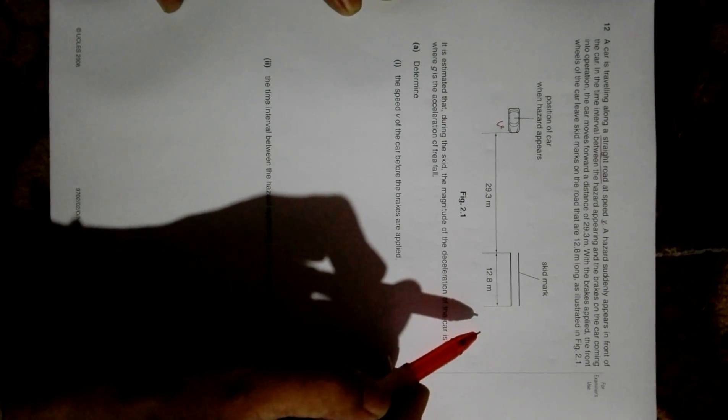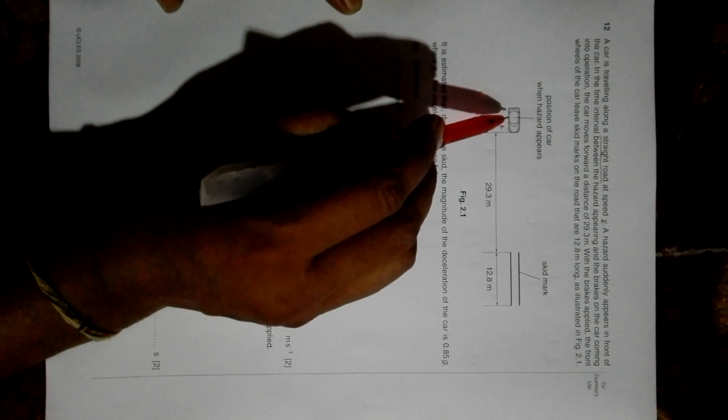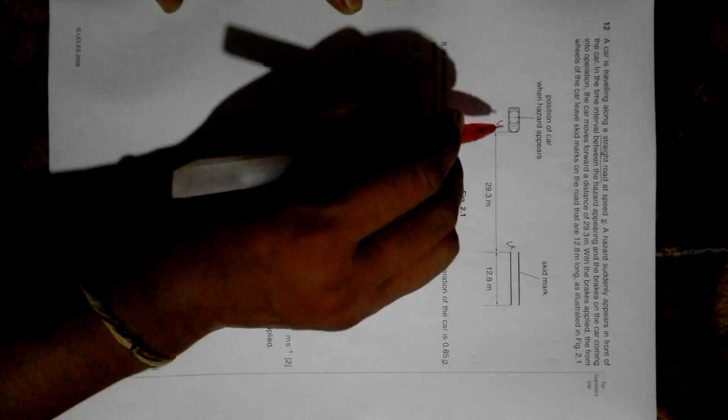A hazard suddenly appears in front of the car. In the time interval between the hazard appearing and the brakes on the car coming into operation, the car moves forward a distance of 9.3 meters. This is our usual inability - we can't apply the brakes right at the moment we see the danger. This time between seeing the event and applying brakes is the response time, during which it has traveled 9.3 meters. Its velocity is V here and throughout this motion.